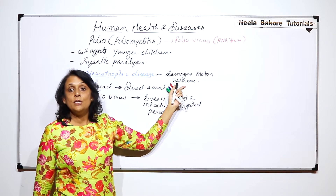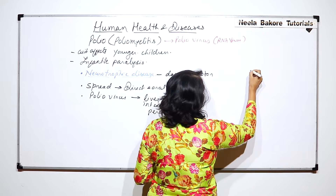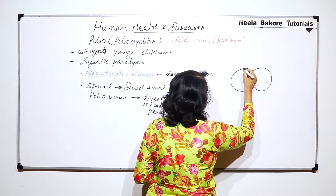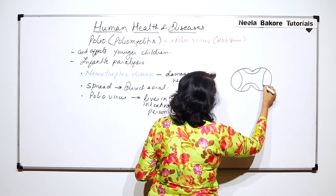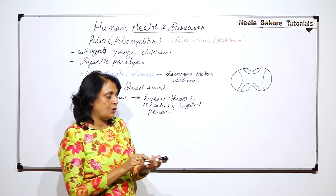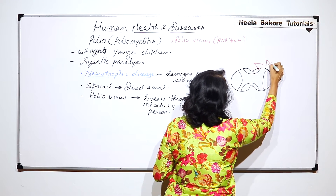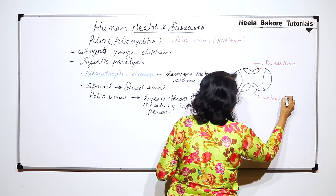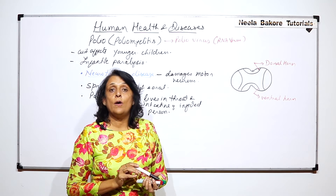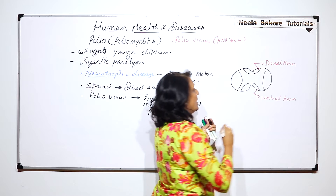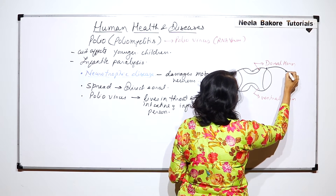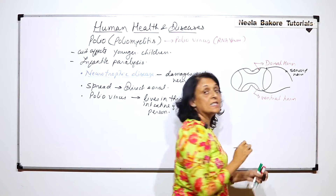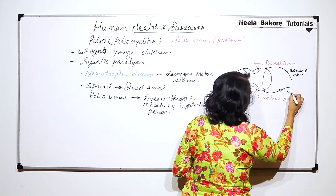Now let us come to the damage part. In the spinal cord, whenever we draw a cross-section, the inner part is grey matter and the outer is white matter. The grey matter is in the form of an H-shape or butterfly shape. This is called the dorsal horn, and this arm is called the ventral horn. The spinal cord is responsible for reflex action. A nerve fiber brings the message in - this is the sensory nerve - and a nerve takes the message away from the spinal cord; this nerve is the motor nerve.